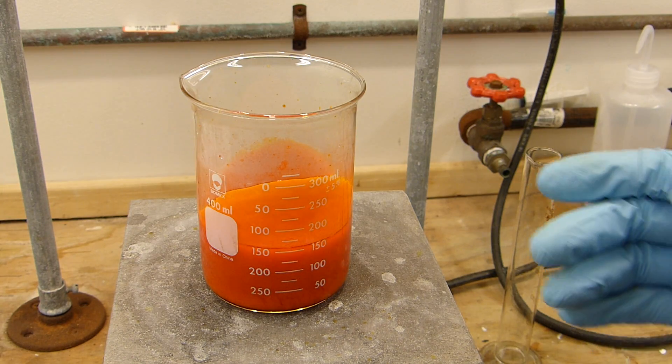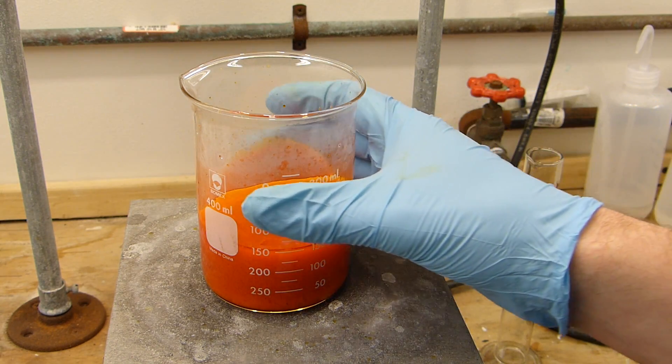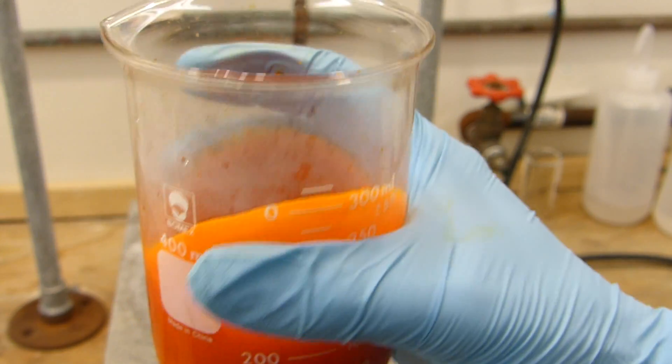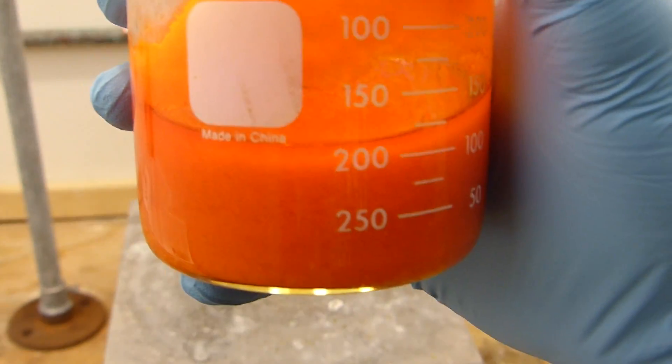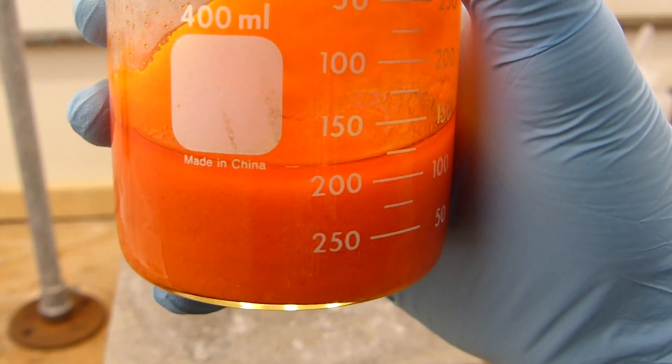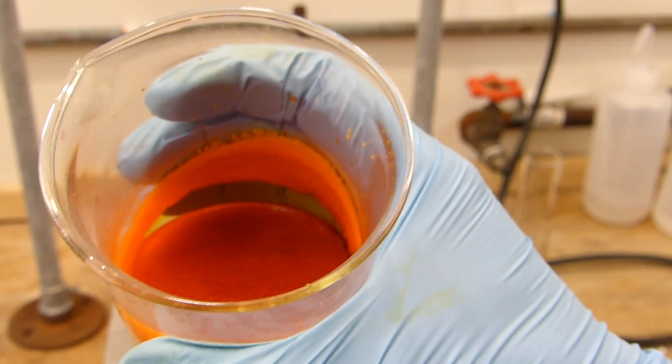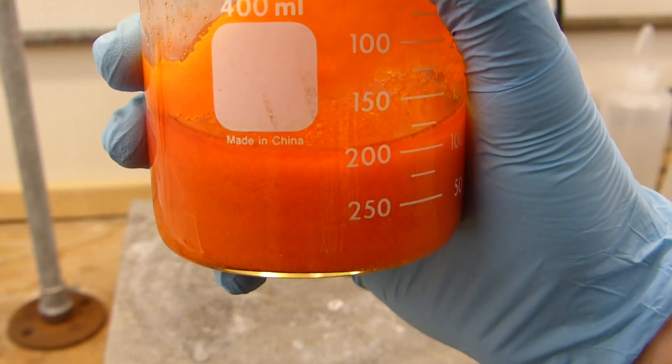All right the last of the pyridine has been added and I'm just now stopping the stirring. And you can see that we now have a bright orange voluminous sort of heavy precipitate in the beaker which is the pyridinium chlorochromate. The solution got quite warm because of the reaction, salt formation that is.